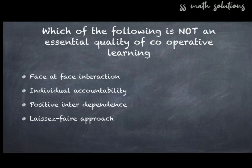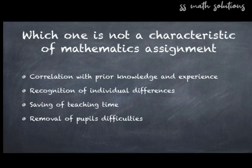Question 24: Which of the following is NOT an essential quality of cooperative learning? Options: face-to-face interaction, individual accountability, positive interdependence, laissez-faire approach. The first three are qualities of cooperative learning. The answer is laissez-faire approach — it is not needed in cooperative learning.